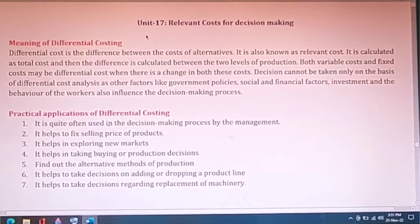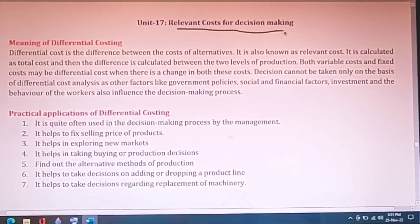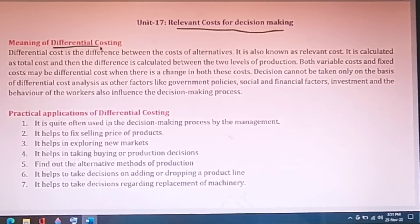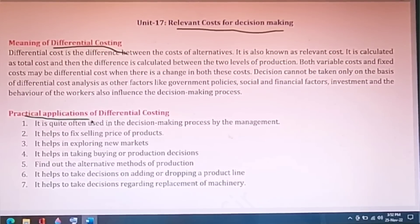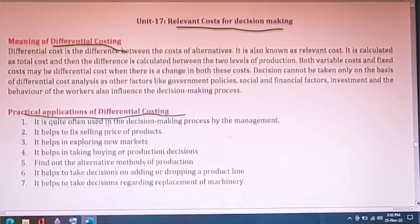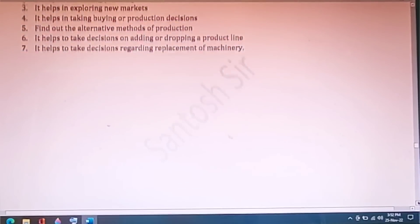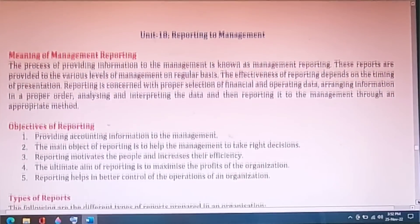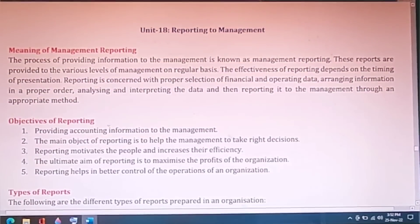Unit 17 is on relevant cost for decision making. Study what is differential costing and the practical applications of differential costing. It is a small chapter without a lot of content.